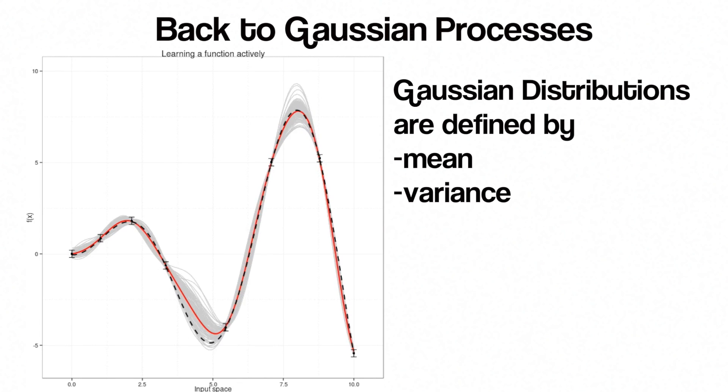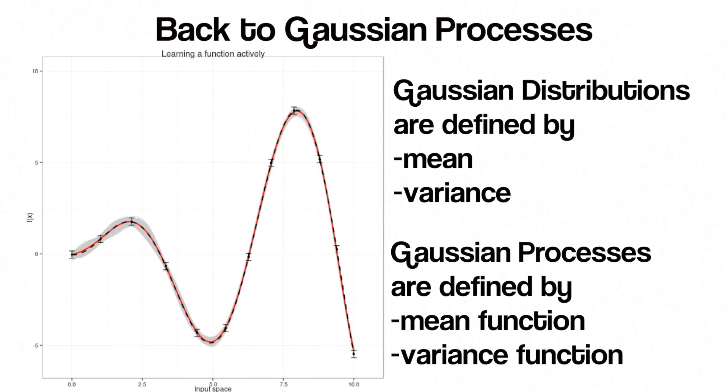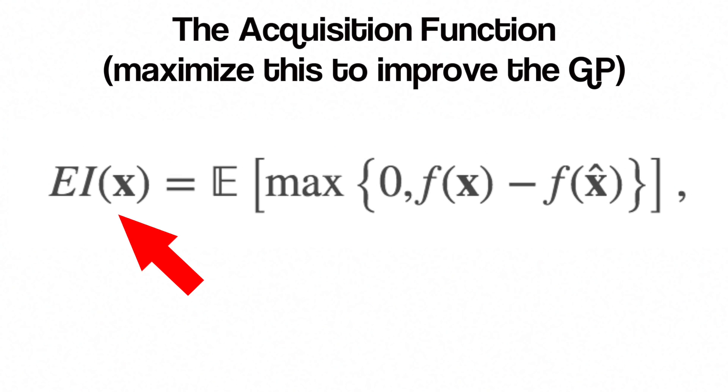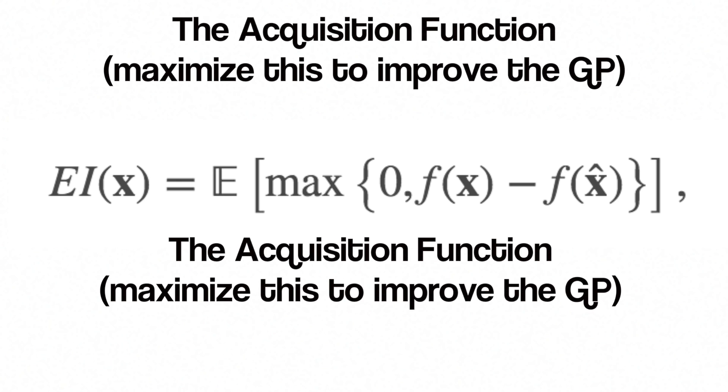A Gaussian process is a generalization of the Gaussian distribution over functions instead of random variables. So, while Gaussian distributions are specified by their mean and variance, Gaussian processes are specified by their mean function and covariance function. The way we find the best point to sample f next from is to pick the point that maximizes an acquisition function. This is a function of the posterior distribution over f that describes the utility for all values of the hyperparams.